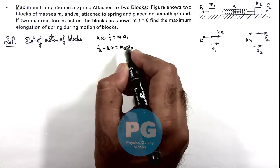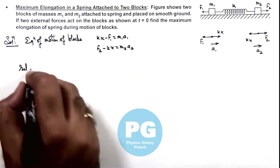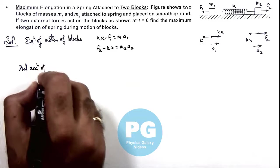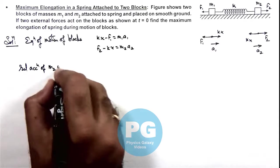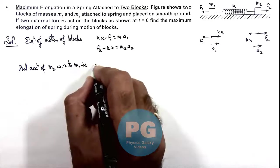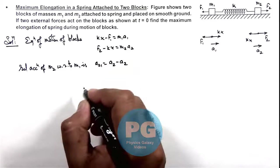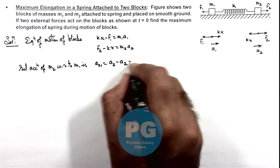From here we can calculate the values of a₁ and a₂ and we can also calculate relative acceleration of m₂ with respect to m₁. Here a₂ with respect to 1 we can write as a₂ minus a₁. If we substitute the values here.